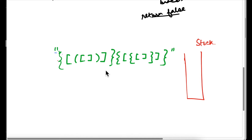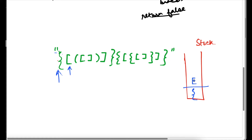Now let's start the dry run with the valid parenthesis string. The first character is an opening brace — we push it to the stack. Then the second character, an opening square brace — we push this. Then we encounter another opening brace — we push it. Then the fourth one — we push this as well.